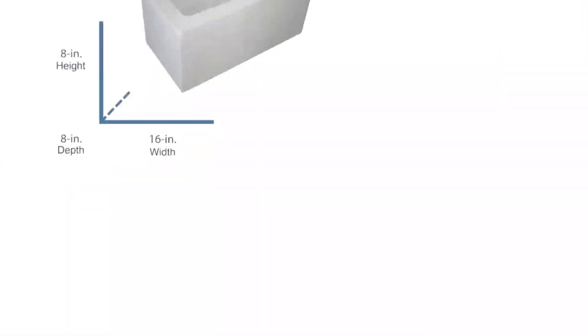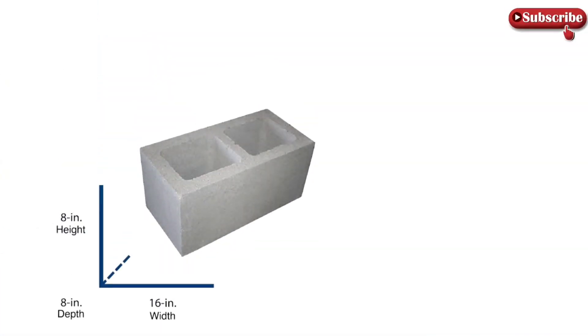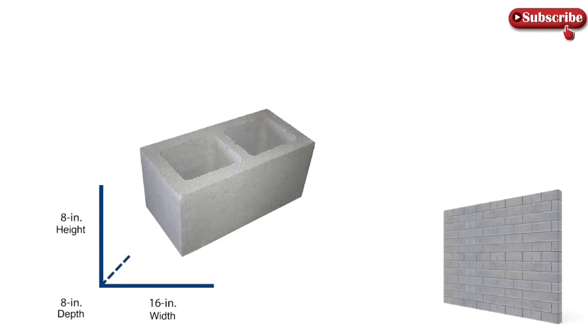We know that standard block size is 16 inches by 8 inches by 8 inches. Now we move to our lesson. Here is a wall for which we are calculating the number of concrete blocks. Its length is 20 feet, its height is 11 feet, and the thickness of the wall is approximately 0.67 feet, which means 8 inches.